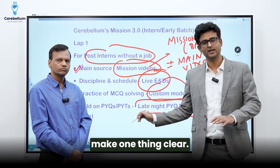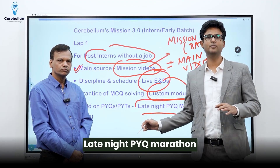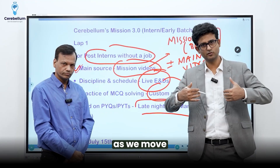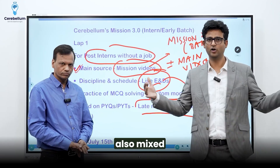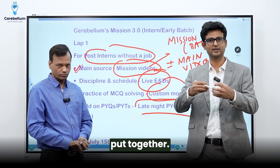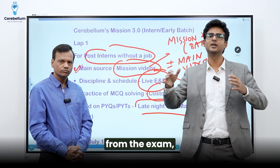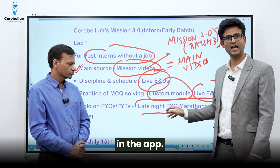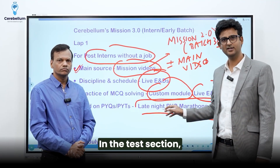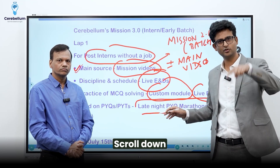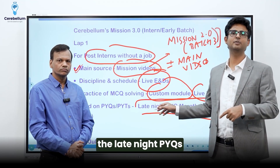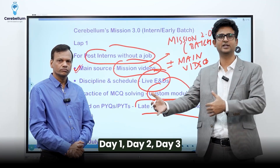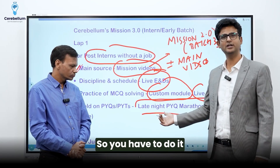Late night PYQ marathons are available in the Cerebellum app in two forms. As we move closer to the exam, they are mixed — all subjects put together. When we are farther from the exam, we have late night PYQ marathons subject-wise. You can go into the app, in the test section, click on the late night PYQs, scroll down, and find late night PYQs for all subjects divided into different chunks — Day 1, Day 2, Day 3 — and do them accordingly.